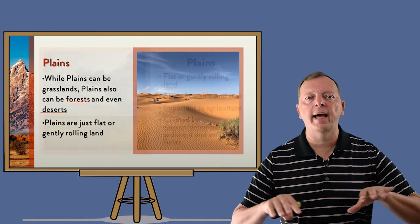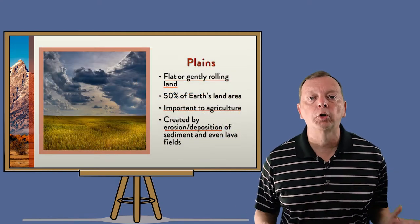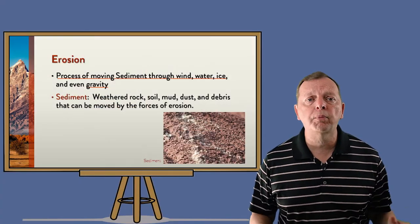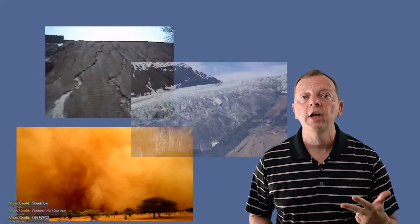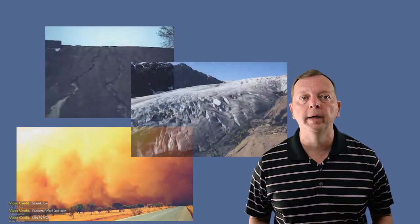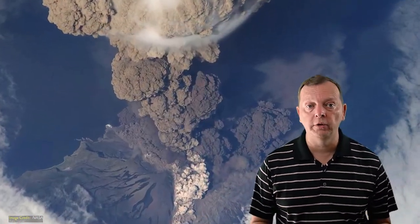A plain is simply defined as a flat area, and there are several processes that can create these flat areas. Chief among these is a process called erosion, which uses wind, water, and even ice to move dirt and rock known as sediment. Wind, water, and ice either remove or deposit sediment to create this level area.